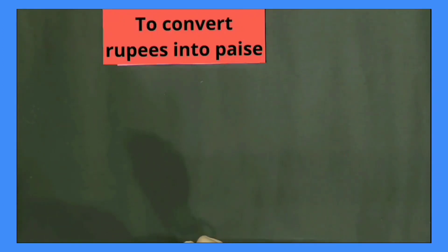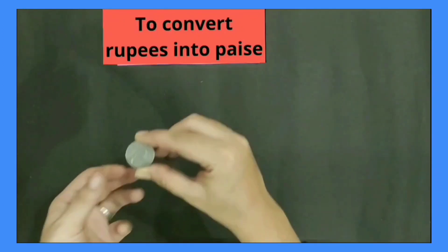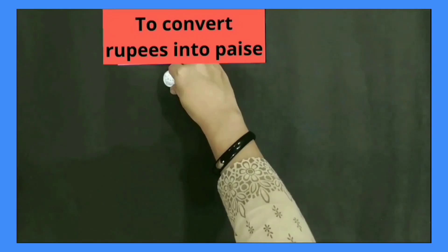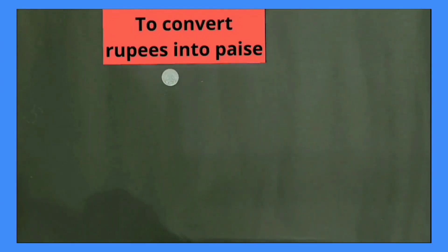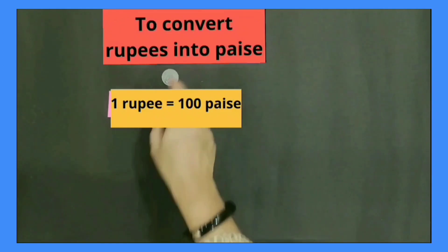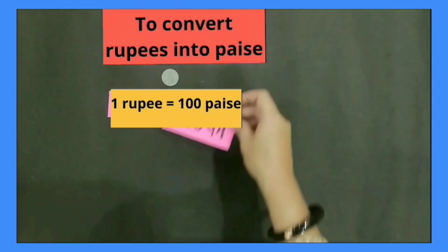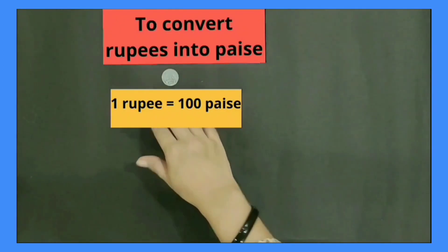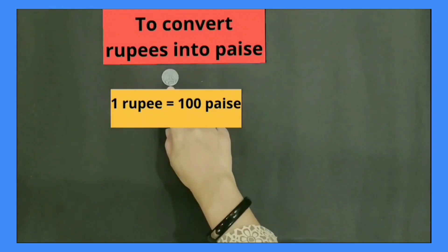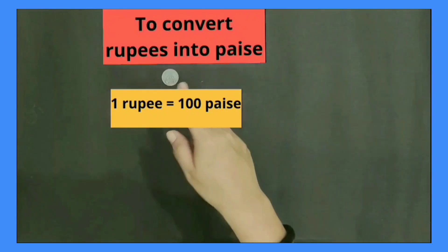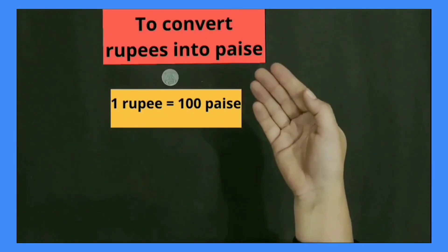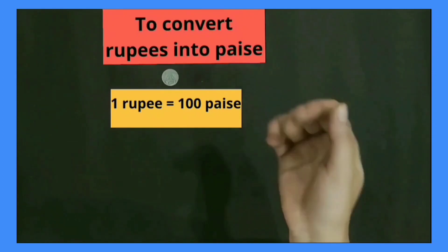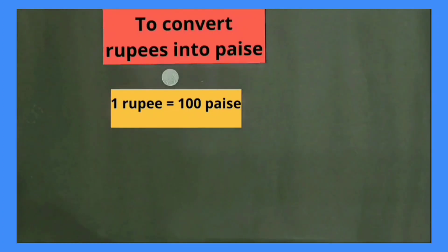Students, I have one rupee coin. Now tell me, how many paise are in one rupee. Yes, one rupee is equal to hundred paise. Now students, we will see how many 10 paise coins, 20 paise coins, 25 paise coins, and 50 paise coins we get in one rupee.